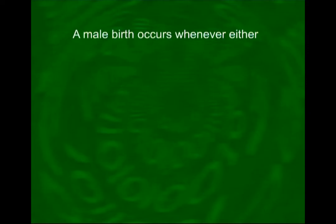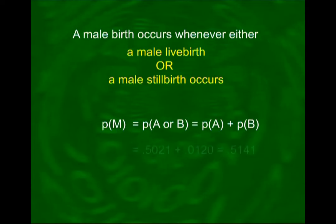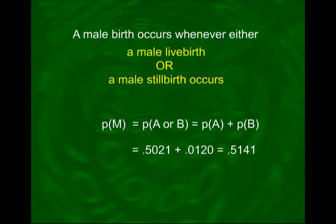The proportions of births in each of these four categories are 0.5021, 0.0120, 0.4750, and 0.0109. A male birth occurs whenever either a male live birth or a male stillbirth occurs. So the proportion of male births regardless of whether they are live or stillborn is equal to the sum of the proportions of these two types: P(male birth) = P(male live birth) + P(male stillbirth) = 0.5021 + 0.0120 = 0.5141.